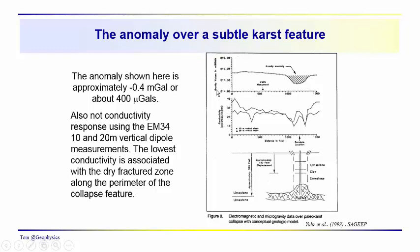Here we've got a feature over a subtle collapse feature over an underground cave, and it's producing an anomaly of negative 0.4 milligals, which would be 400 microgals. We did talk earlier about the EM34, 10, 20, and 40-meter intercoil spacings. We do have the 10 and 20-meter intercoil spacing measurements of terrain conductivity across this feature, and you can see that the terrain conductivity decreases over the rim of this collapse feature. That's most likely due to lower conductivity and fractured, well-drained areas along the margins of this collapse feature.